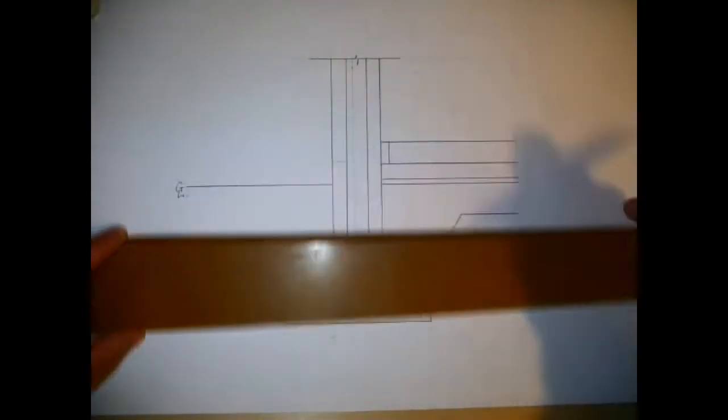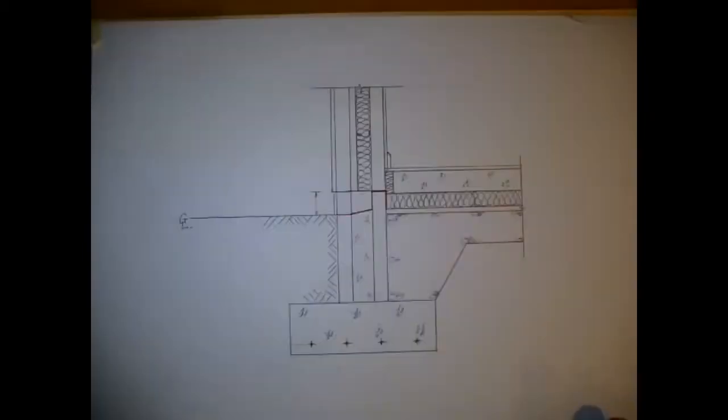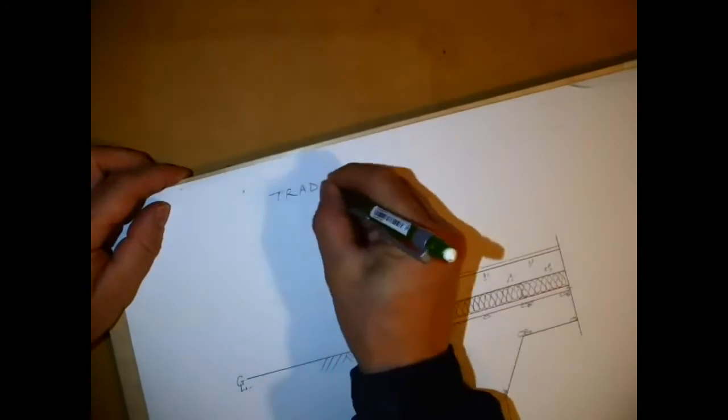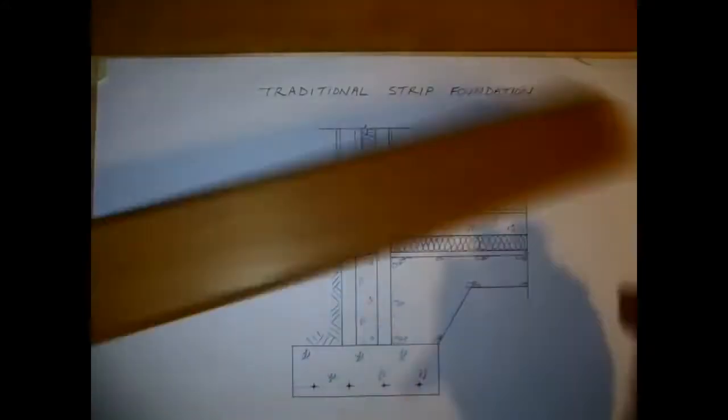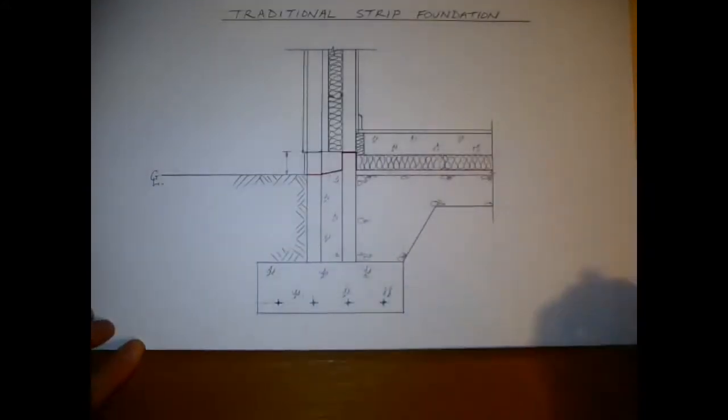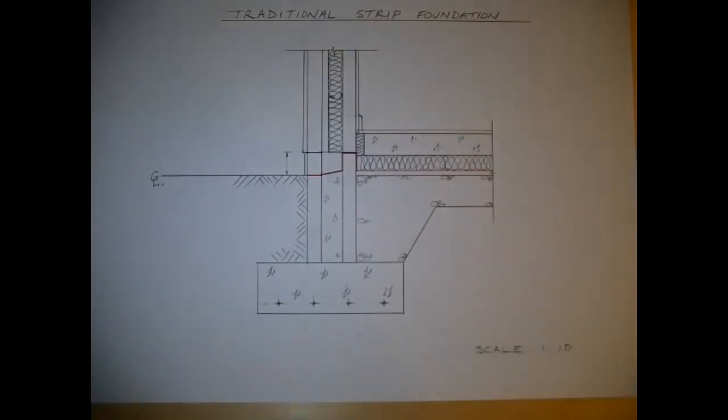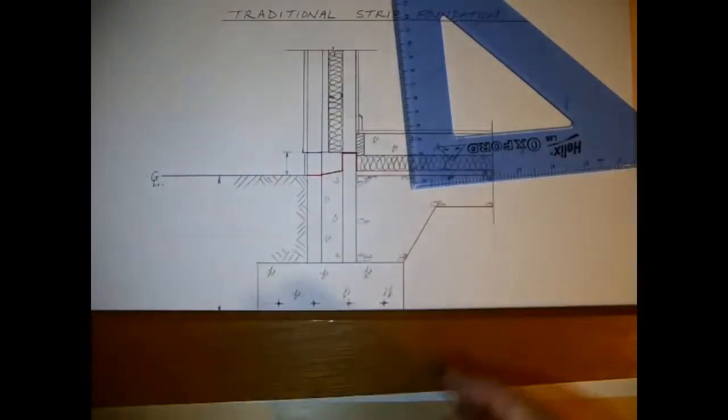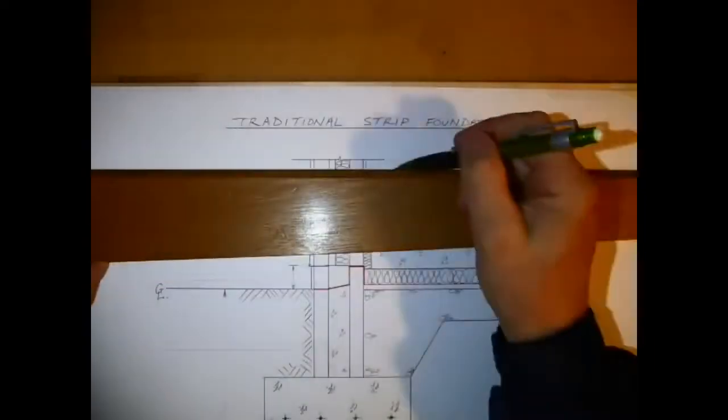I've also set in the DPC 150 millimeters up from the bottom here, and I've included a red line showing the stepped DPC going across to meet the DPM. So the DPM is in red and DPC is in blue, and it differs slightly to the actual drawing as well.